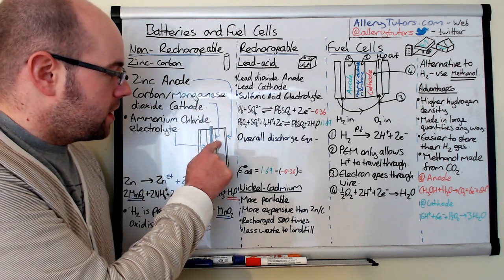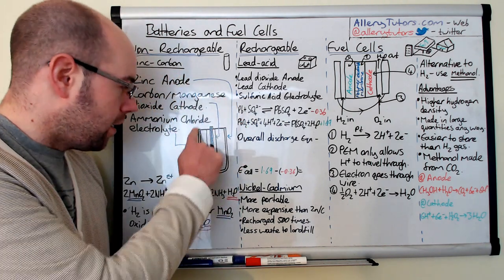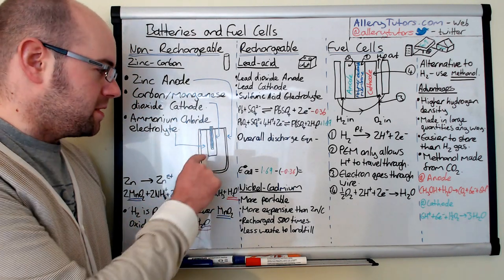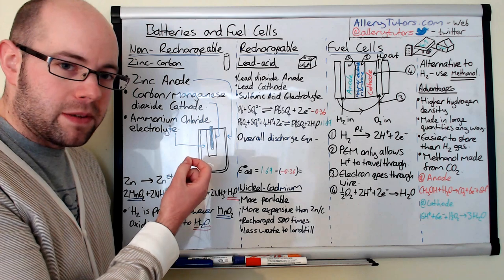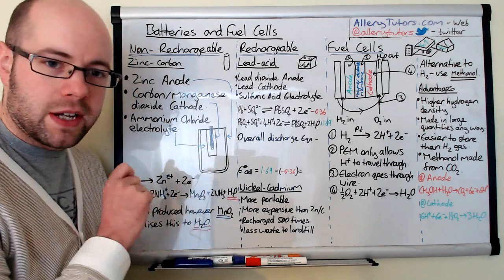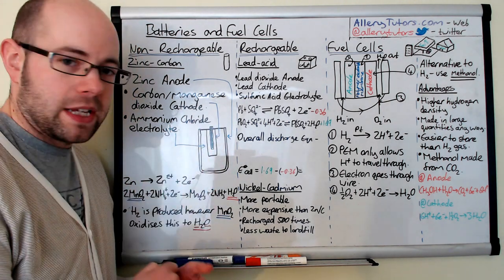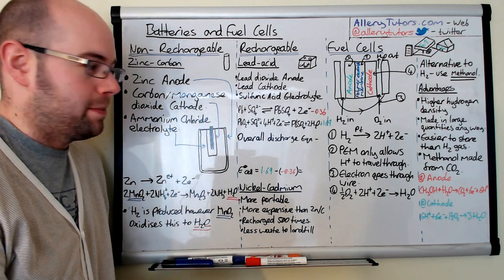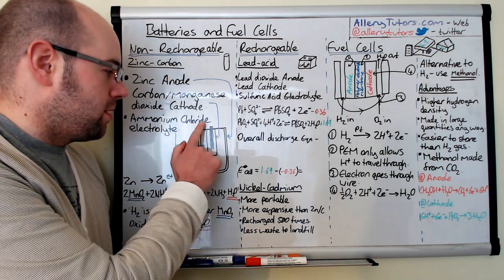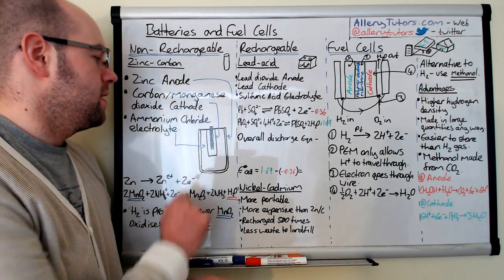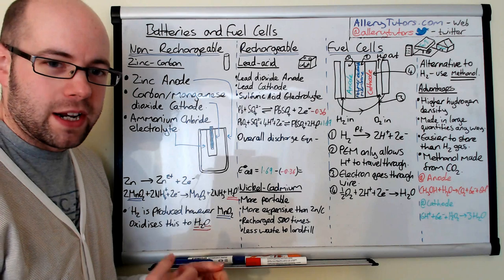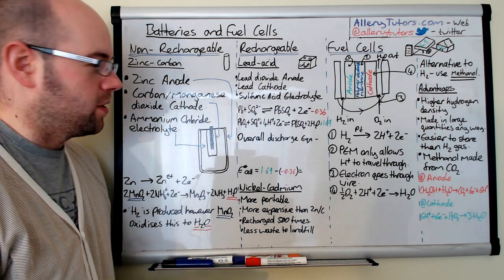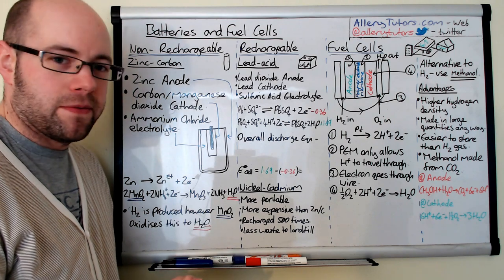The zinc anode is the actual casing of the battery. The carbon manganese dioxide is like a powder mixed into a middle casing right in the middle of the battery. Through the middle is a carbon or graphite rod, capped off with a metal top — that's the dimple you'd see on the top of the battery. In between the casing and the inner casing is the ammonium chloride electrolyte paste, which is quite corrosive if it leaks out.